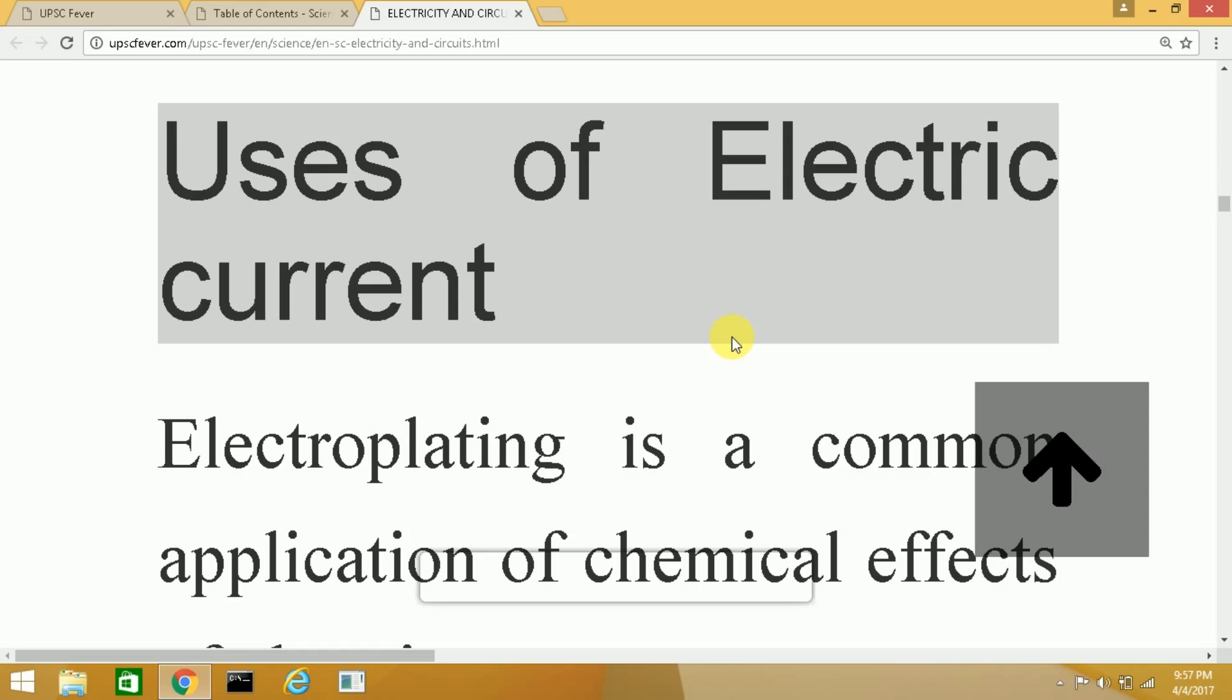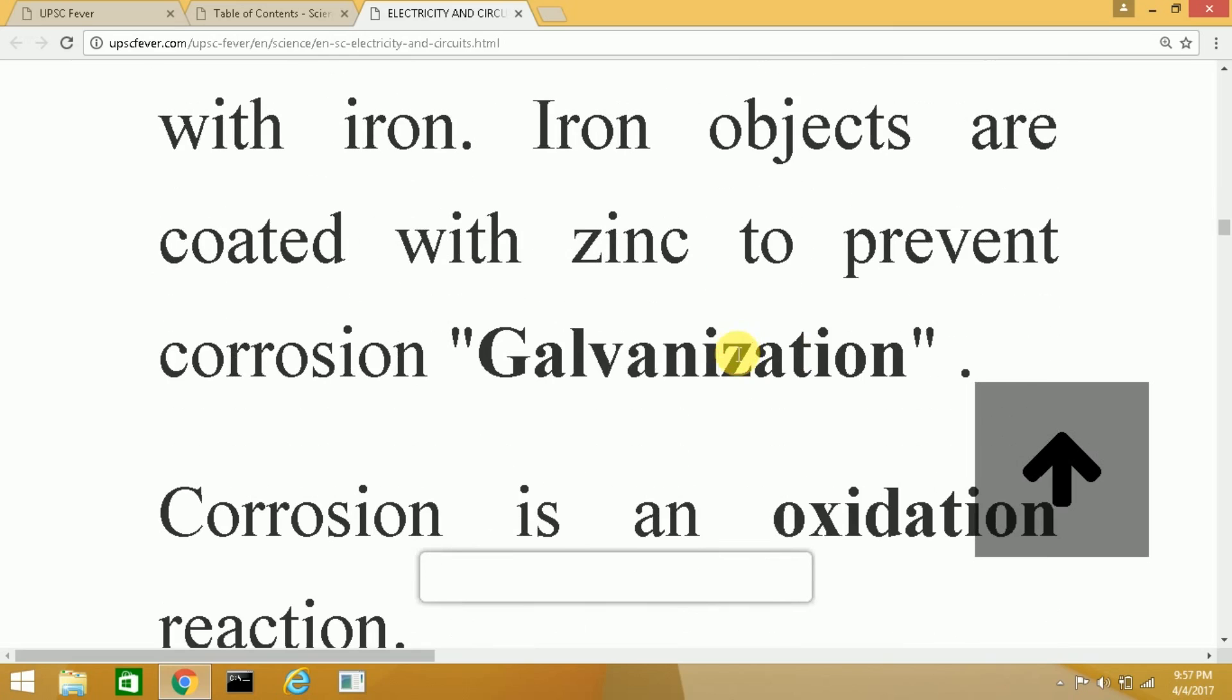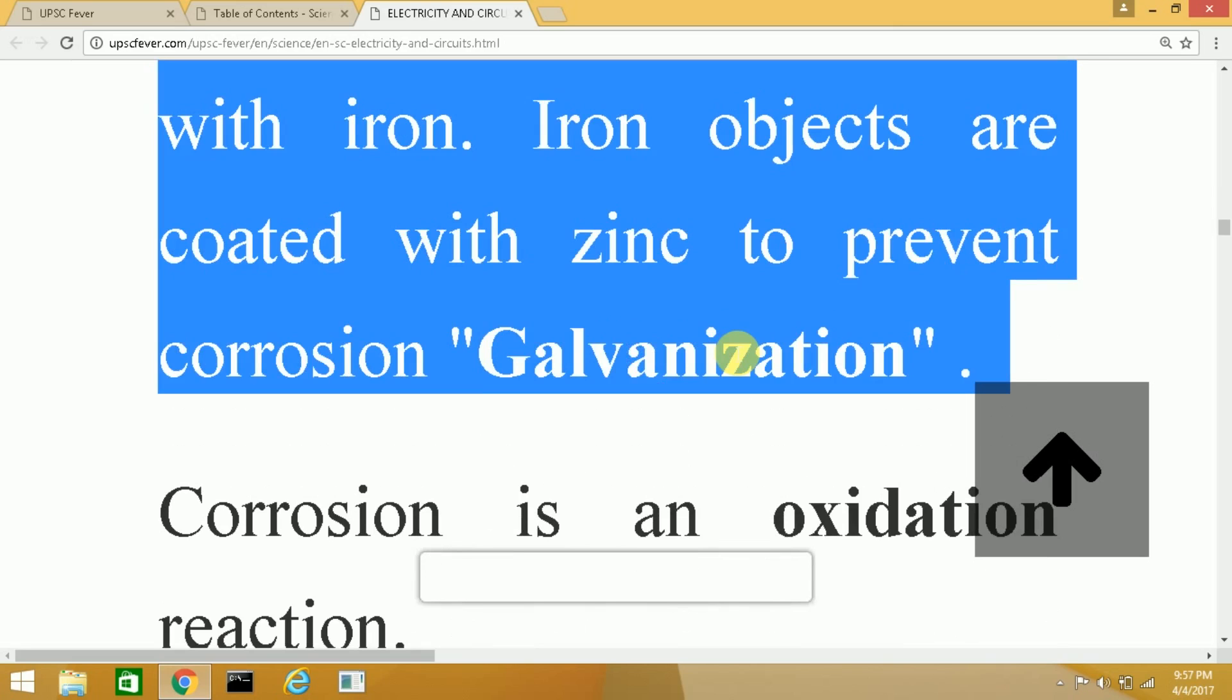Iron objects are also coated with zinc to prevent corrosion and this process of zinc coating is known as galvanization. You can note that down.